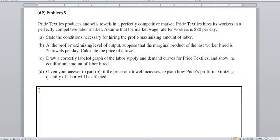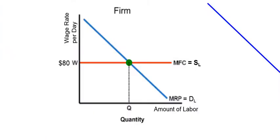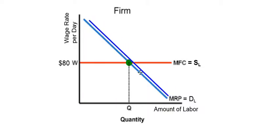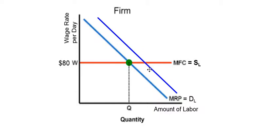Now we need to look at the last part, which uses your answer to part B. Once you know what the price of towels is — what if the price of towels increases? We want to explain how Pride Textiles' profit-maximizing quantity of labor will be affected. If the price goes up and marginal revenue product equals marginal physical product times price, that means with a higher price, at every quantity of labor you're going to have a higher marginal revenue product because you're multiplying it by a higher price. So that's going to shift our labor demand curve — the marginal revenue product curve for the firm — out and to the right.